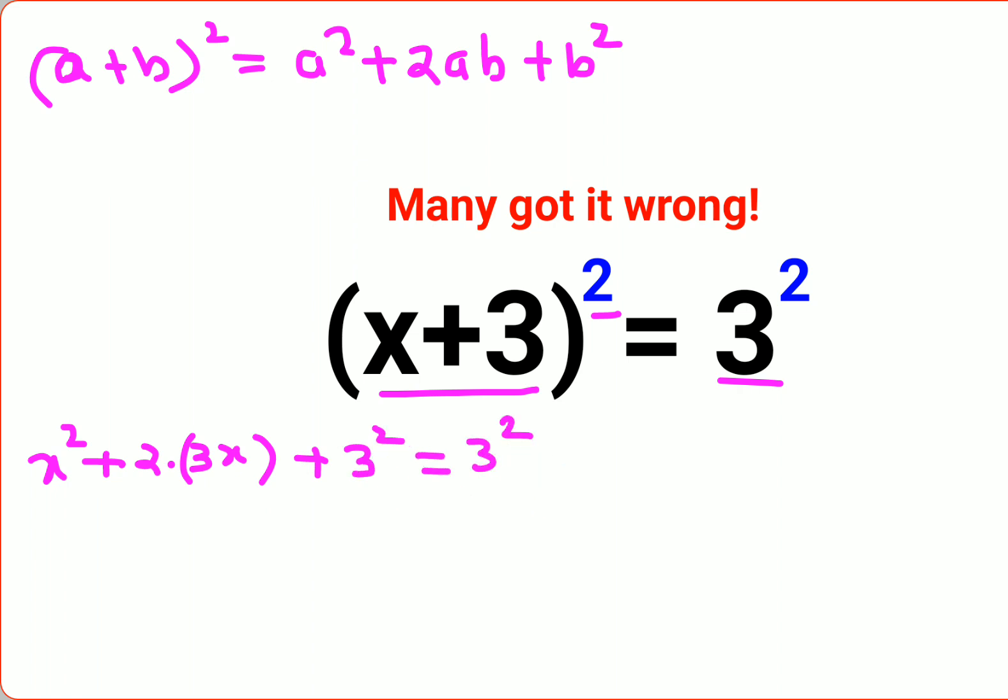Now in order to find the value of x we need to subtract both sides by 3². So basically you got x² + 2 × 3x gets you 6x. This becomes 0 and this also becomes 0. So it becomes 0 over here.